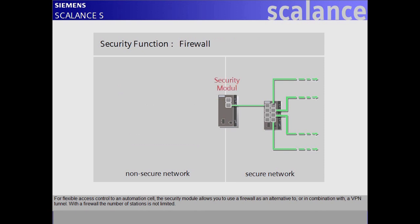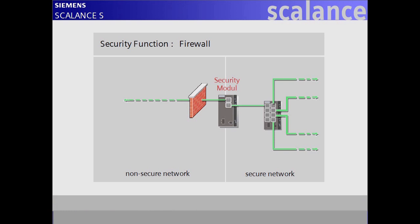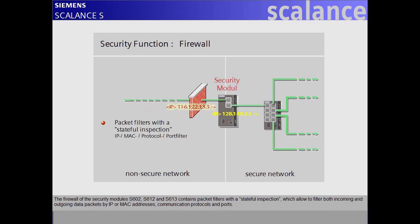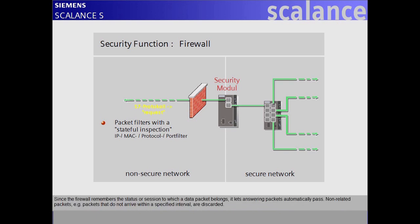For flexible access control to an automation cell, the security module allows you to use a firewall as an alternative to, or in combination with, a VPN tunnel. With a firewall, the number of stations is not limited. The firewall of the security modules S602, S612, and S613 contains packet filters with stateful inspection, which allow filtering both incoming and outgoing data packets by IP or MAC addresses, communication protocols, and ports. Since the firewall remembers the status or session to which a data packet belongs, it lets answering packets automatically pass. Non-related packets — for example, packets that do not arrive within a specified interval — are discarded.